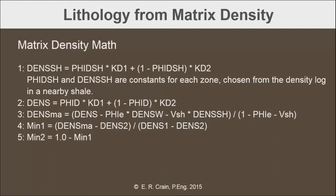Once the densities are attained, whether they come from porosity or directly from the density log, we put these numbers into equation number three, which calculates dense-MA — that's the matrix density calculated from the logs. It requires the density log value, the effective porosity from a previous porosity calculation, the density of water, the density of shale, and the volume of shale.